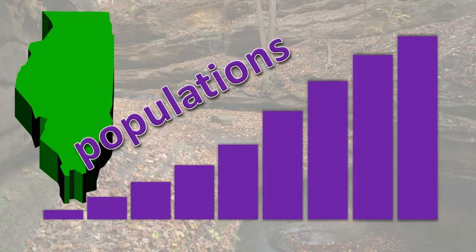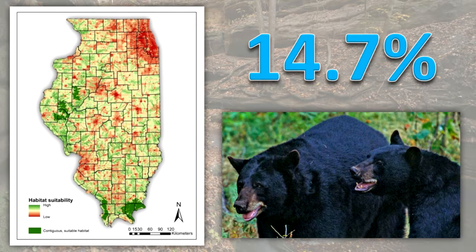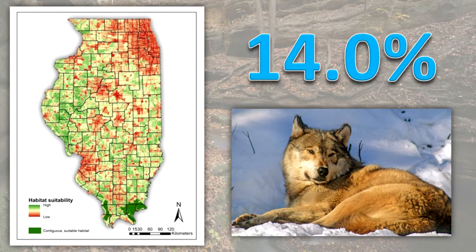Although it is possible that populations could be established in the state, there is relatively little suitable habitat remaining for these species to live in. Only about 14.7% of Illinois is suitable habitat for black bears, 6.6% is suitable for cougars, and 14% is suitable for wolves.